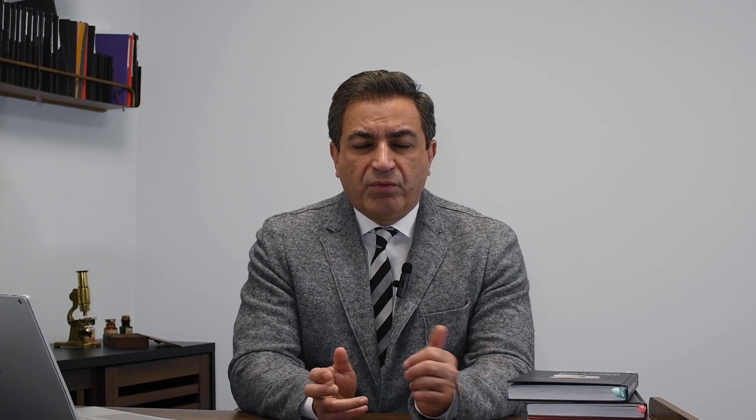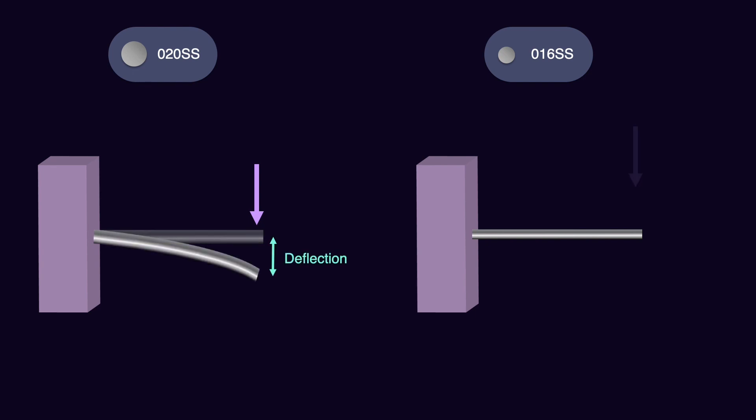Assume we have a 016 stainless steel wire and we want to compare that with a 020 stainless steel — same material, just different thickness, different diameters. Assume we cut them with the same length, attach them to the wall, and apply a load at the end of the wire. We measure the amount of deflection and draw the load deflection graph for these wires.